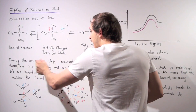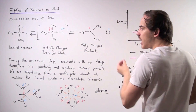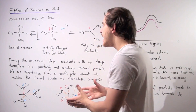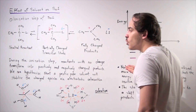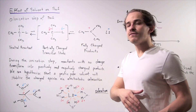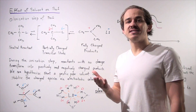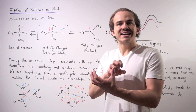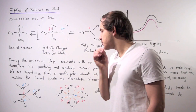During the ionization step, reactants with no charge transform into positively and negatively charged products. We can hypothesize that a polar protic solvent will stabilize these charged species via electrostatic interaction between the partial positive and partial negative charges of our solvent and products. A polar protic solvent is a solvent that is able to donate an H atom for hydrogen bonding and can also form electrostatic differences in charge — meaning the atoms on our solvent have different partial charges.